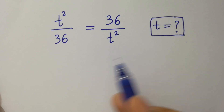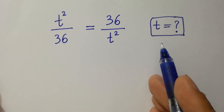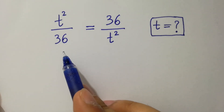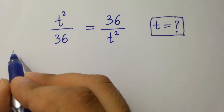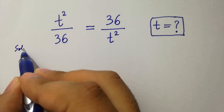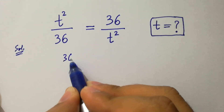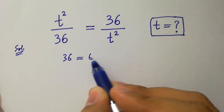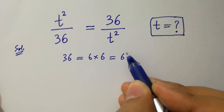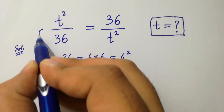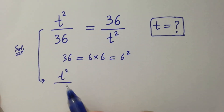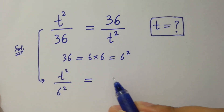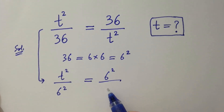Hello friends. Find the value of t if t² over 36 equals 36 over t². Let's have a solution. Since 36 equals 6 times 6, which equals 6², then it will be t² over 6² equals 6² over t².